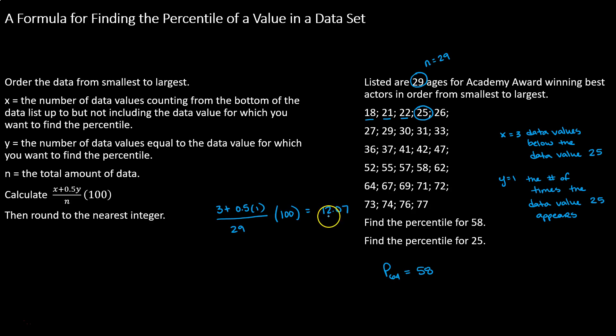Again that's not a nice whole number like we use for percentiles so we're going to need to round that. The 0 in the tenths place tells us to round 12.07 down to 12. That means that the 12th percentile or p12 is what the data value 25 represents.